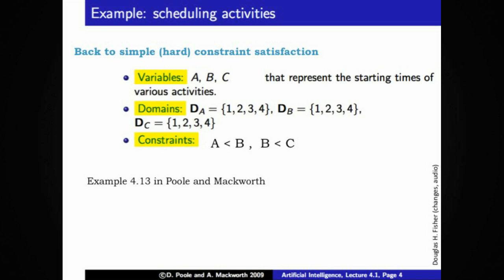So back to simple constraint satisfaction, hard constraint satisfaction. Scheduling activities are a great example of hard constraint satisfaction. So A represents the start time for some activity, B another activity, C yet another activity. The domains correspond to the possible start times, 1, 2, 3, 4 in this simple example. The constraints in this case, that activity A start before activity B, and activity B start before activity C.